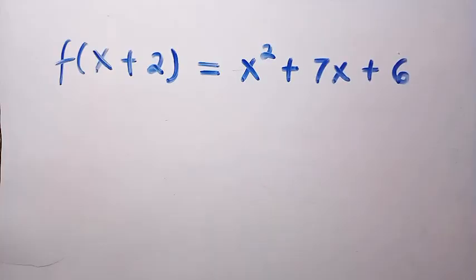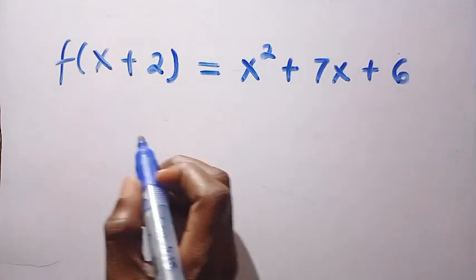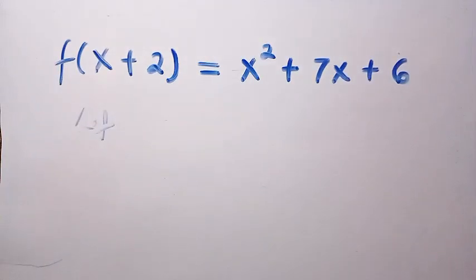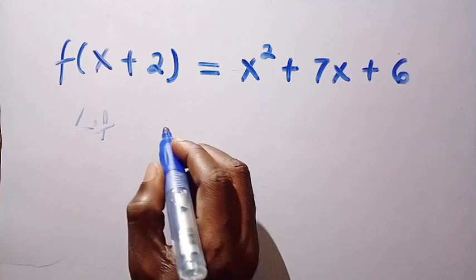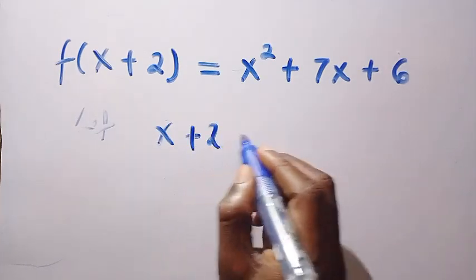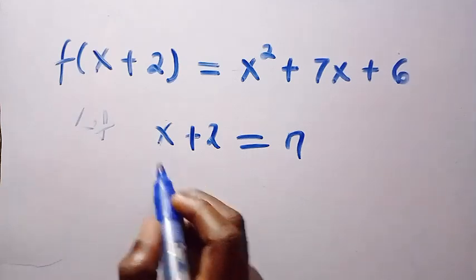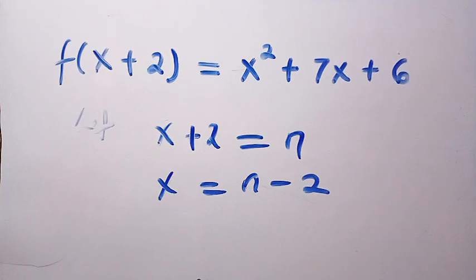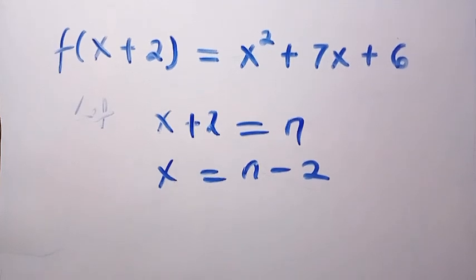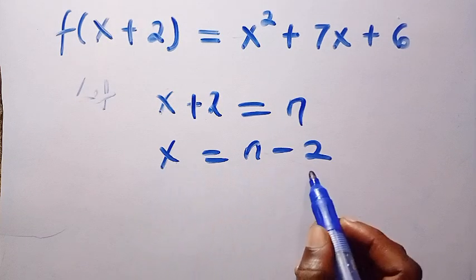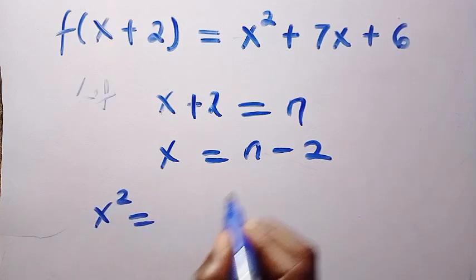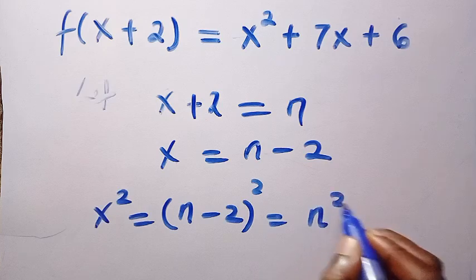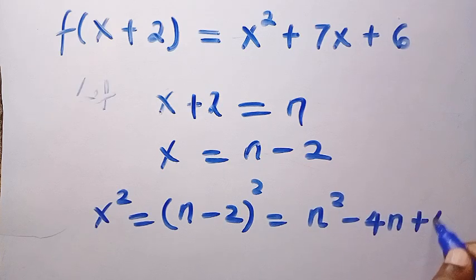In this one, we are going to be applying the substitution method. Just like x plus 2, suppose I replace x plus 2 with another letter. Since I choose letter n, we are going to have x plus 2 equals n. And we make x the subject by having x equals n minus 2. So having x equals n minus 2, then we take the square of this. Here becomes n minus 2 squared, which equals n squared minus 4n plus 4.